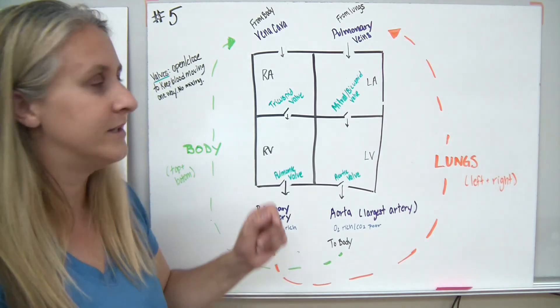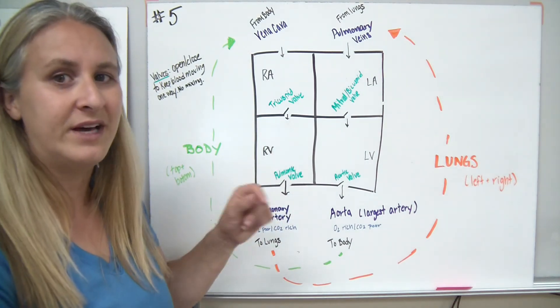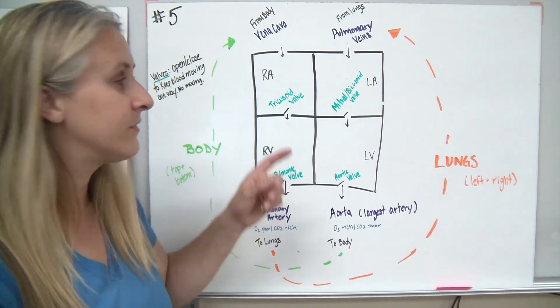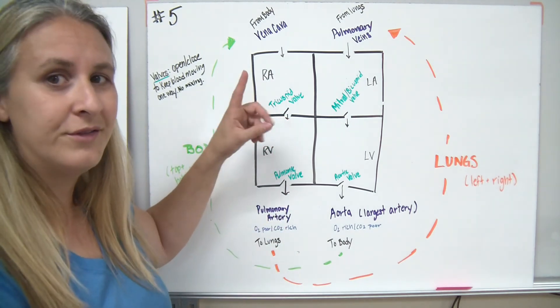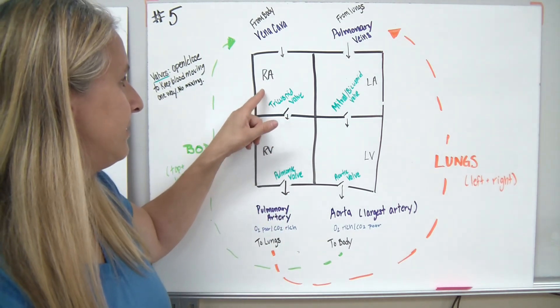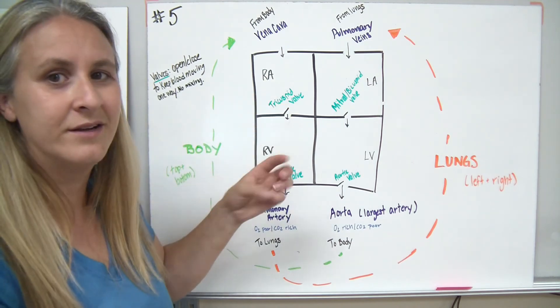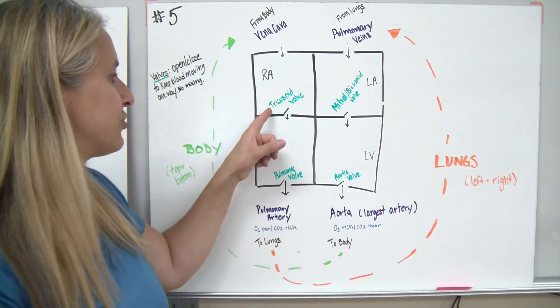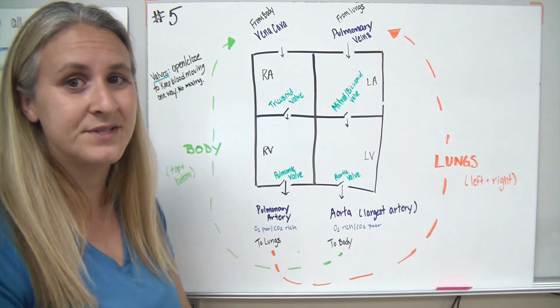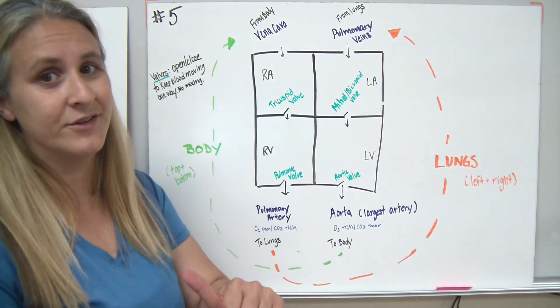For the tricuspid valve, tri means three. If I make a capital R, there's three pen strokes. Down, I make the circle, and then down again. Three pen strokes, tri, there's three flaps to the tricuspid valve. That's on the right side.